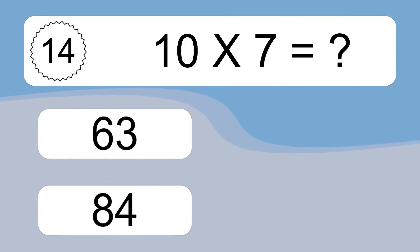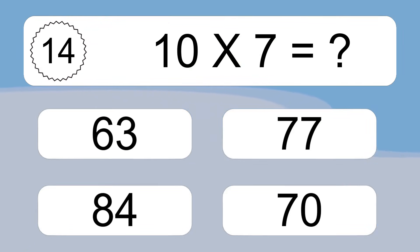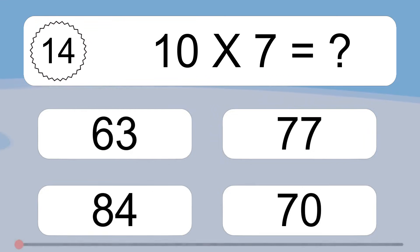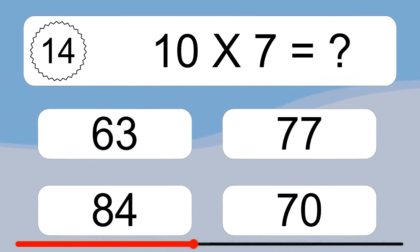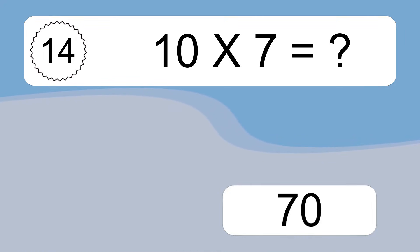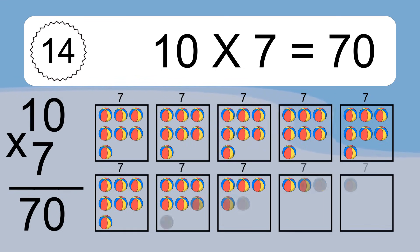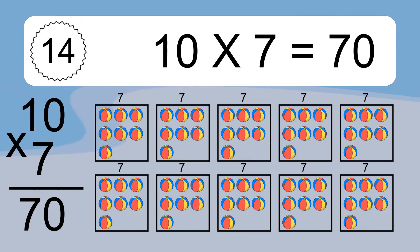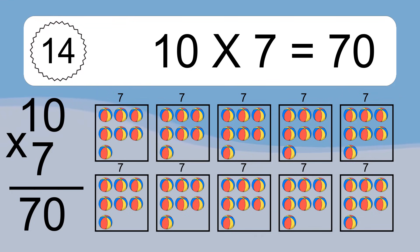10 times 7 equals what? 10 times 7 equals 70. We have 10 boxes, and each box has 7 colorful balls inside. If you count all the balls in all the boxes together, you will have 10 times 7 balls. This equals 70 balls.